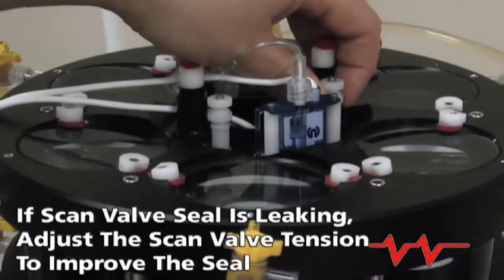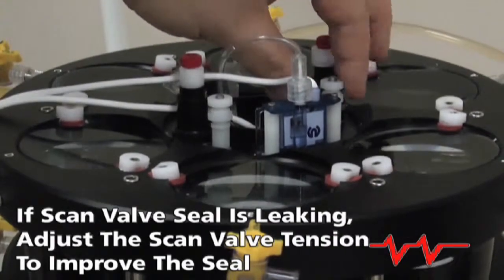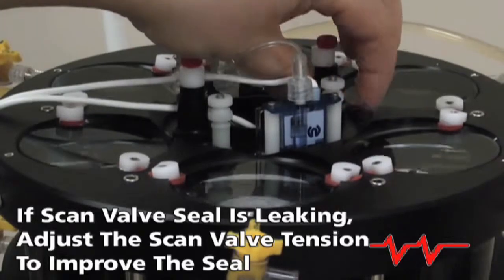If there is a salt buildup around the scan valve seal or fluid leaking out, the scan valve tension may likely need to be adjusted to improve the seal.